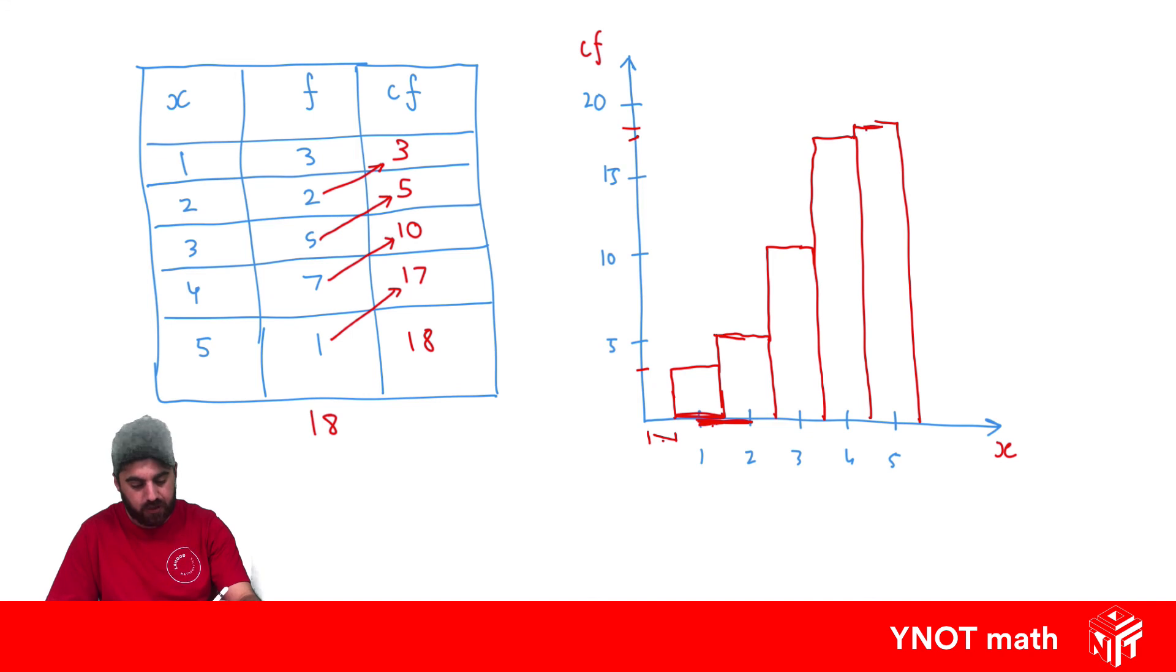And that's our cumulative frequency histogram, but then we can draw our polygon where we connect all of them. We come from zero and go to our first bottom left corner, then connect all the top right corners of our histograms together to make our polygon.